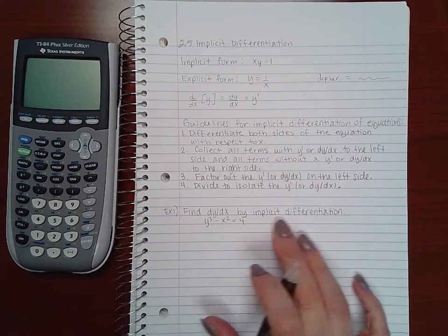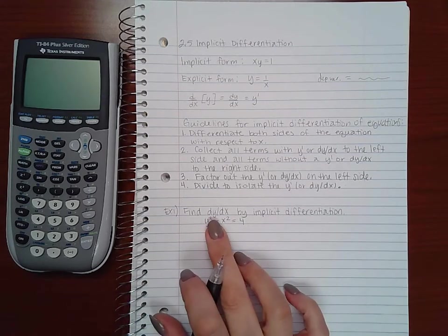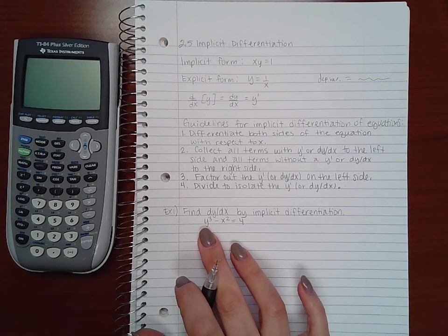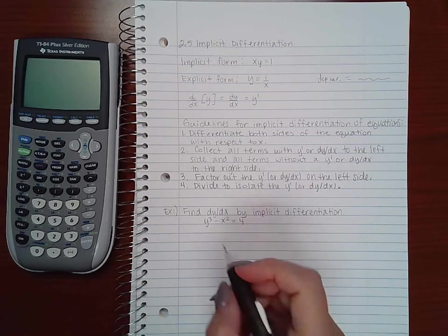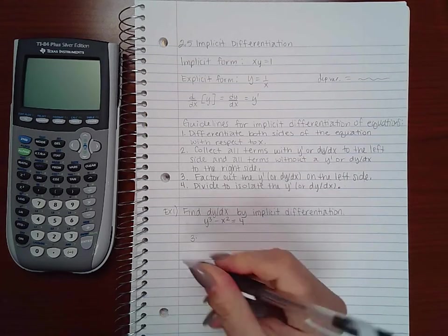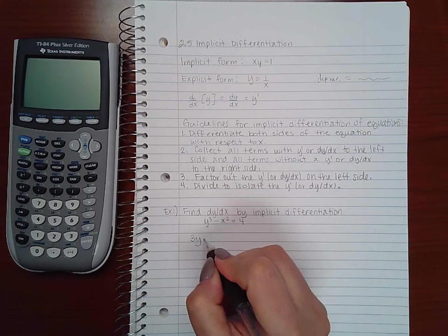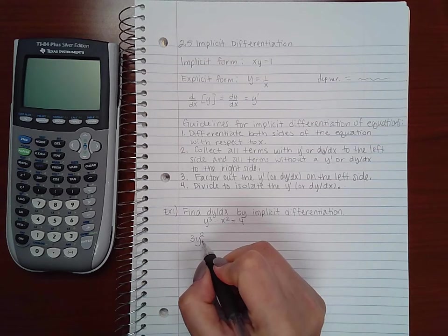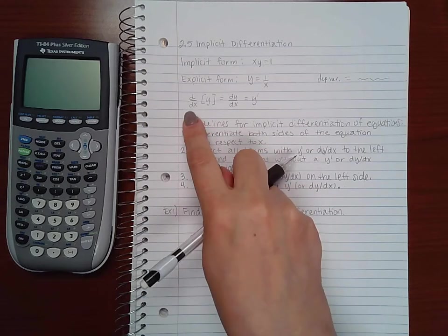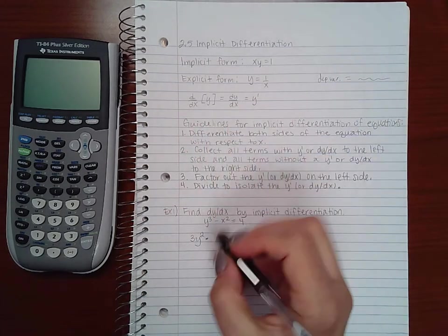It says find dy/dx by implicit differentiation. If I take the derivative of y cubed, what I'm going to end up with is 3, keep my base the same y squared, but then I have to multiply by the derivative of my base. And the derivative of y is dy/dx.